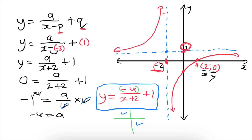Our final function is y equals negative 4 over x plus 2 plus 1. Notice A is negative, which confirms the graph is in the second and fourth quadrants of the asymptotes — consistent with what was drawn. Hyperbolic functions are easy: you know how to draw the graph from an equation, and how to find the equation from a graph. Everything else is just interpretation, which we'll cover in a coming video.